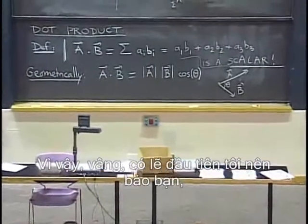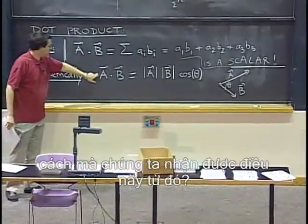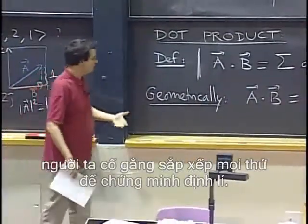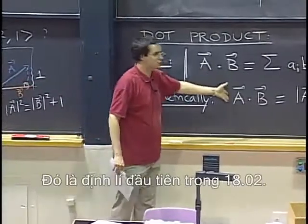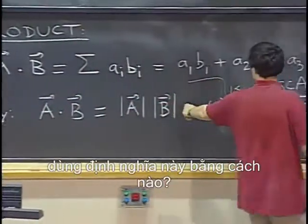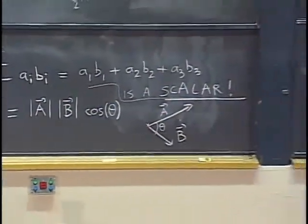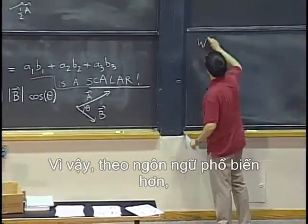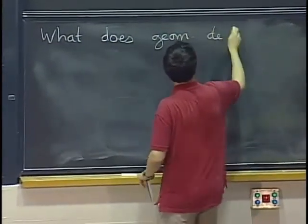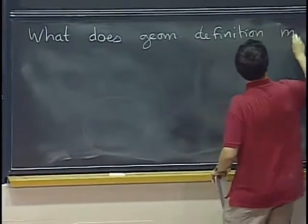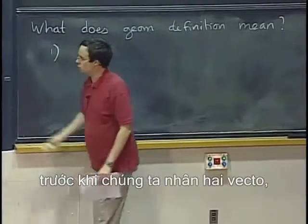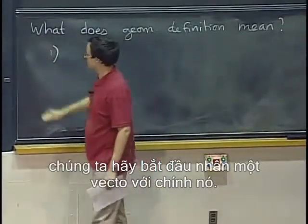Maybe I should first tell you how we get the geometric formula from the component definition. In math, one tries to justify everything and prove theorems — so that is the first theorem in 18.02. How do we prove it? Let's start by multiplying a vector with itself, which is probably easier.